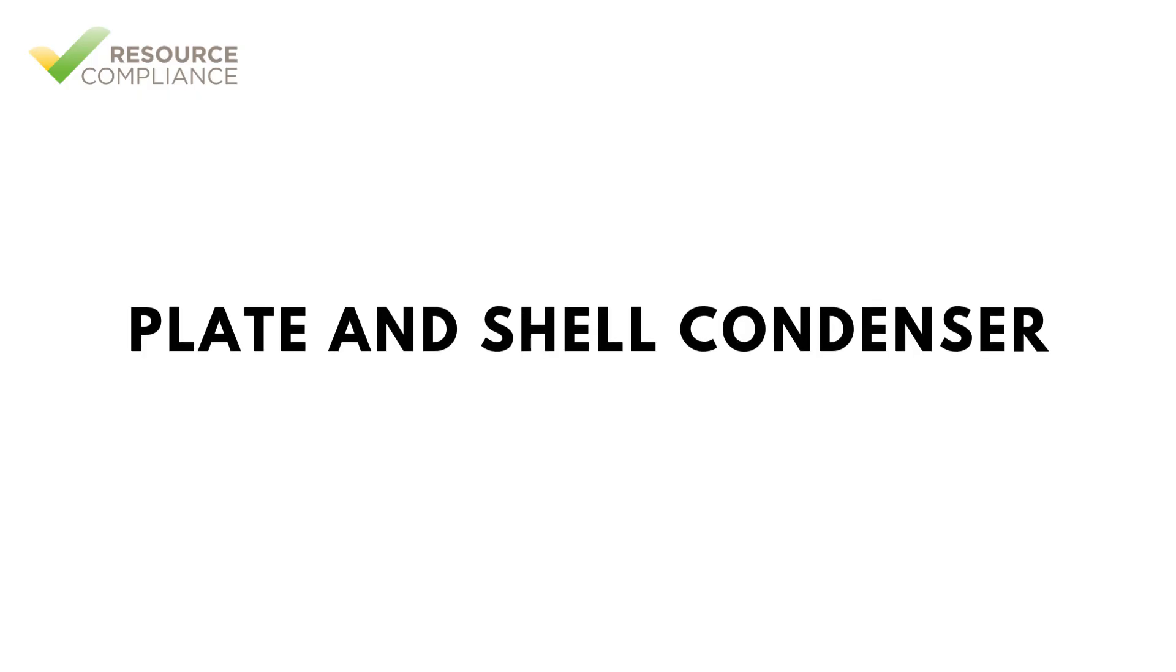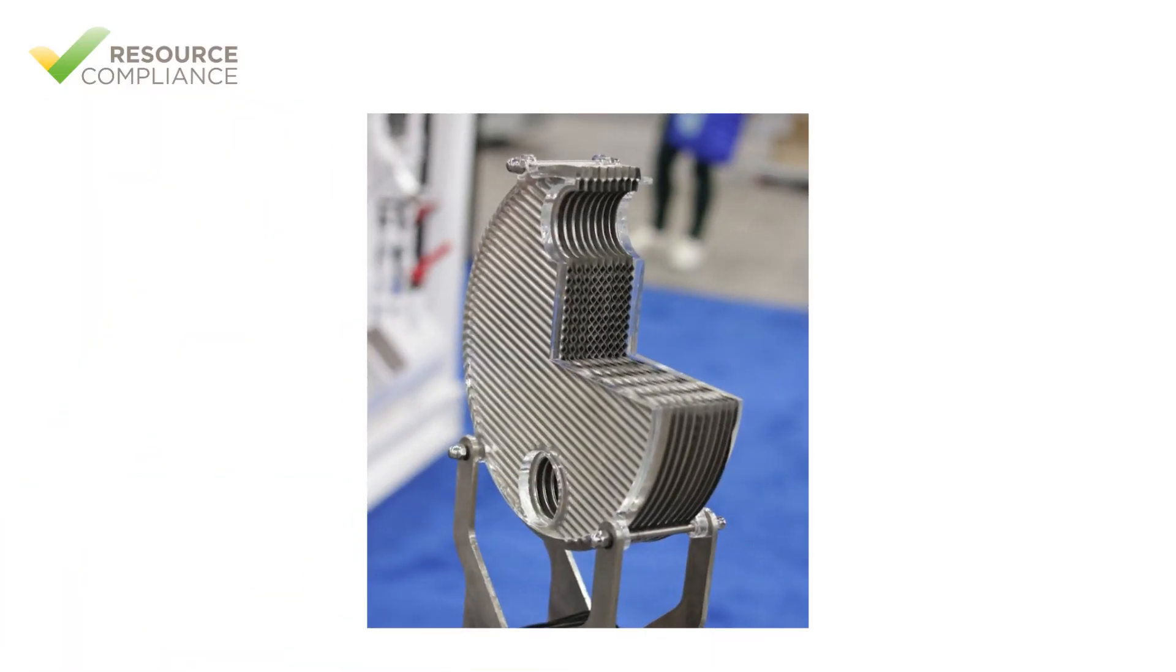A plate and shell condenser is a hybrid design that combines features of both the plate and frame and shell and tube designs enhancing thermal efficiency and structural robustness. Plate and shell condensers consist of a cylindrical outer shell similar to a shell and tube heat exchanger.